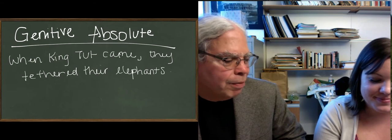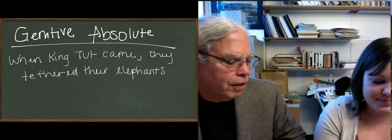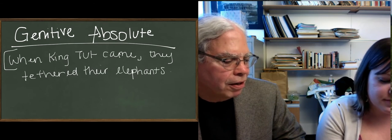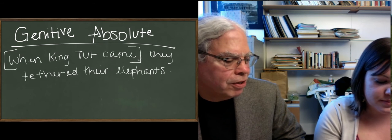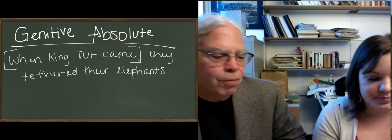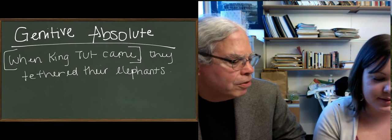If you think about it, 'when King Tut came,' if you're going to make 'came' into a participle, the answer is simple - it's going to agree with King Tut. But what case is King Tut going to be in? He has no grammatical relationship to any word in the rest of the sentence.